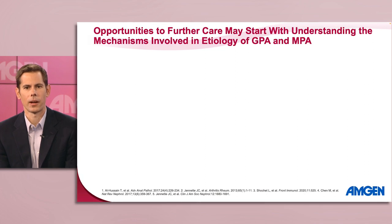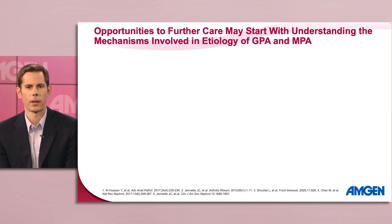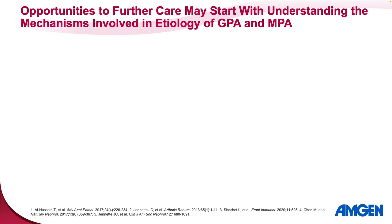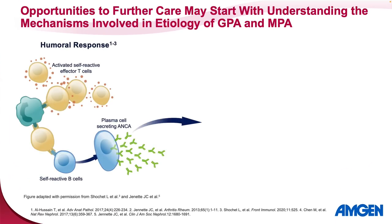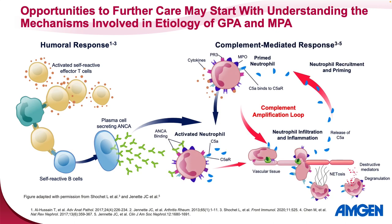As we look for ways to further care for our patients like Jane with GPA or MPA, we might find opportunities by understanding the roles of different pathways and mechanisms in the etiology of these diseases. As we discussed previously, the humoral response does play a key role in development of ANCA and neutrophil activation, while priming and recruitment of neutrophils is amplified by elements of the alternative complement system. Dr. Villaforte, can you walk us through a closer look at the role of this pathway?